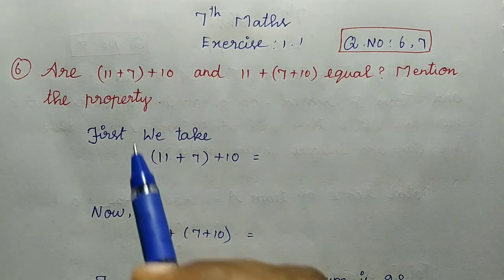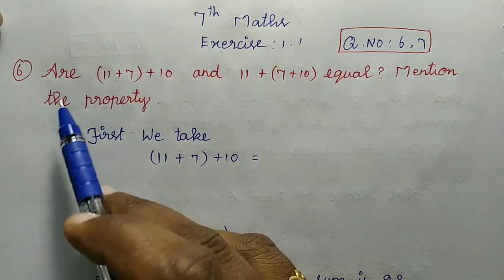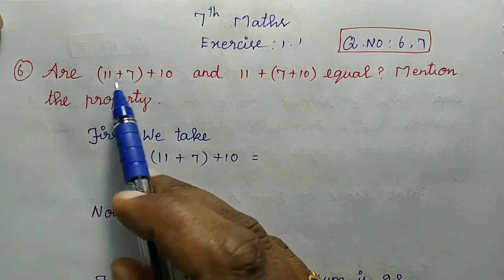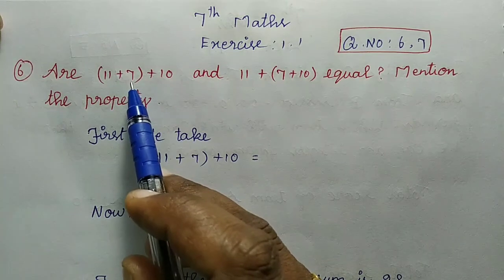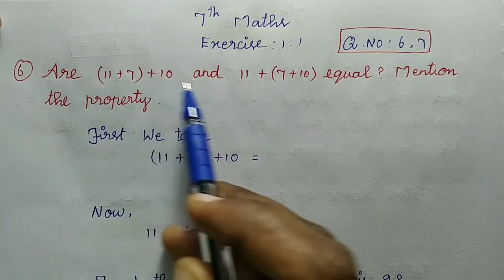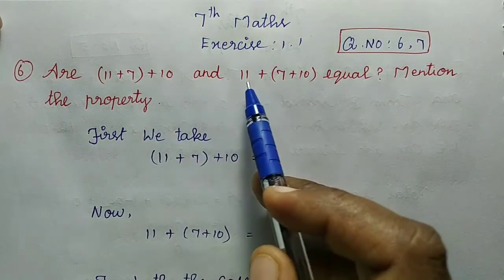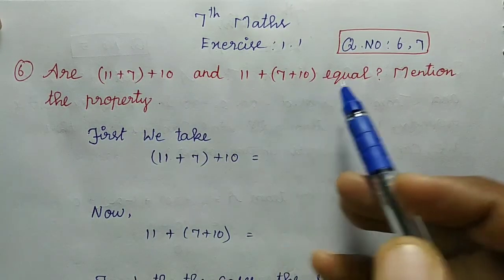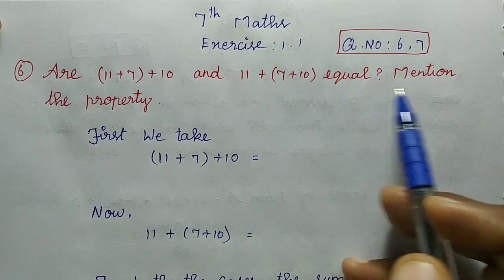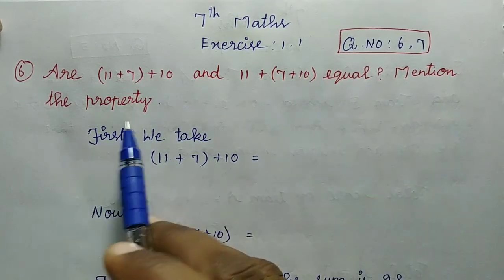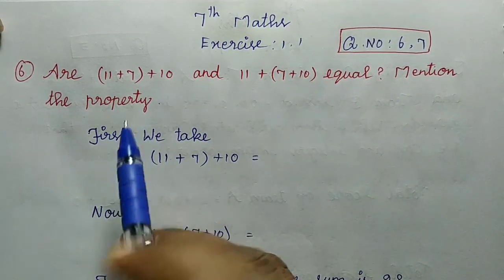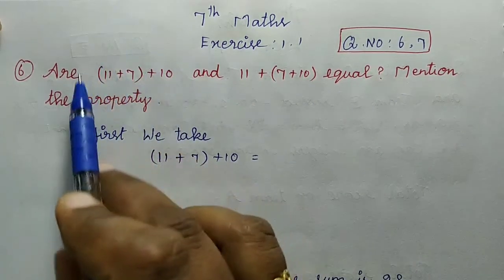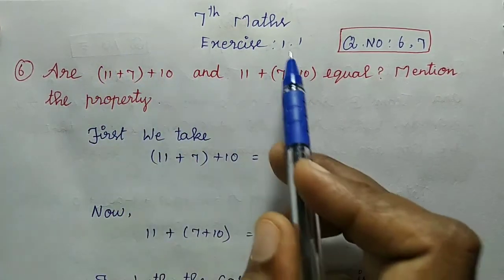Question number 6: 11 plus 7 plus 10, and 11 plus 7 plus 10 are equal — mention the property. So here we have two sets of integers.